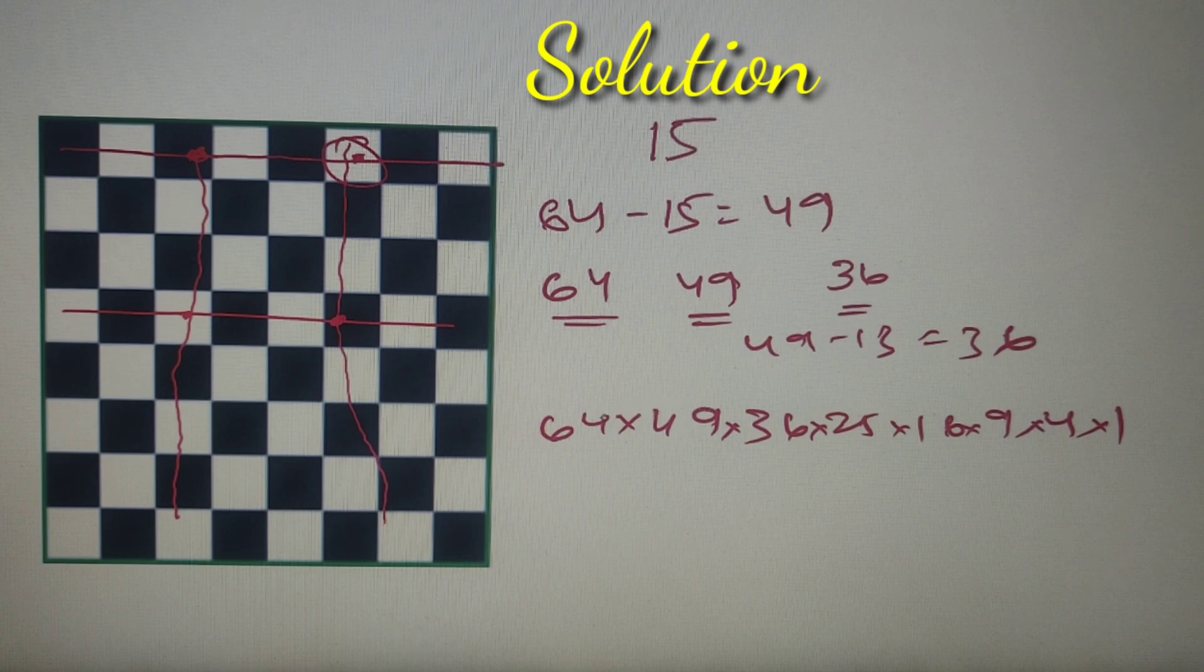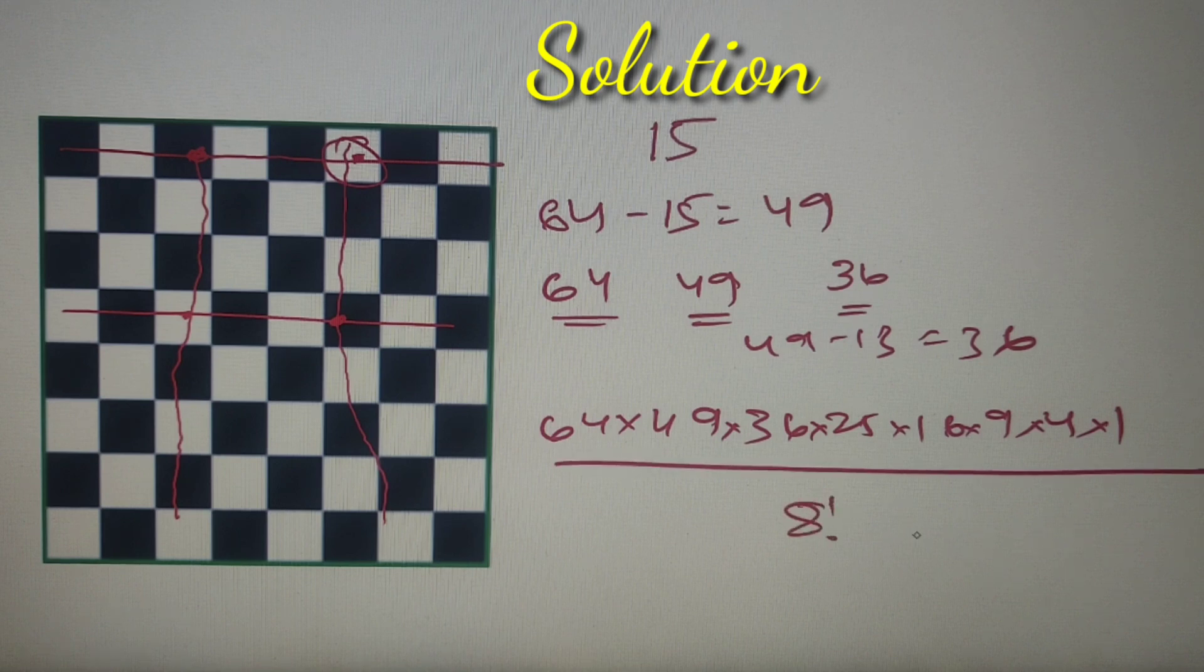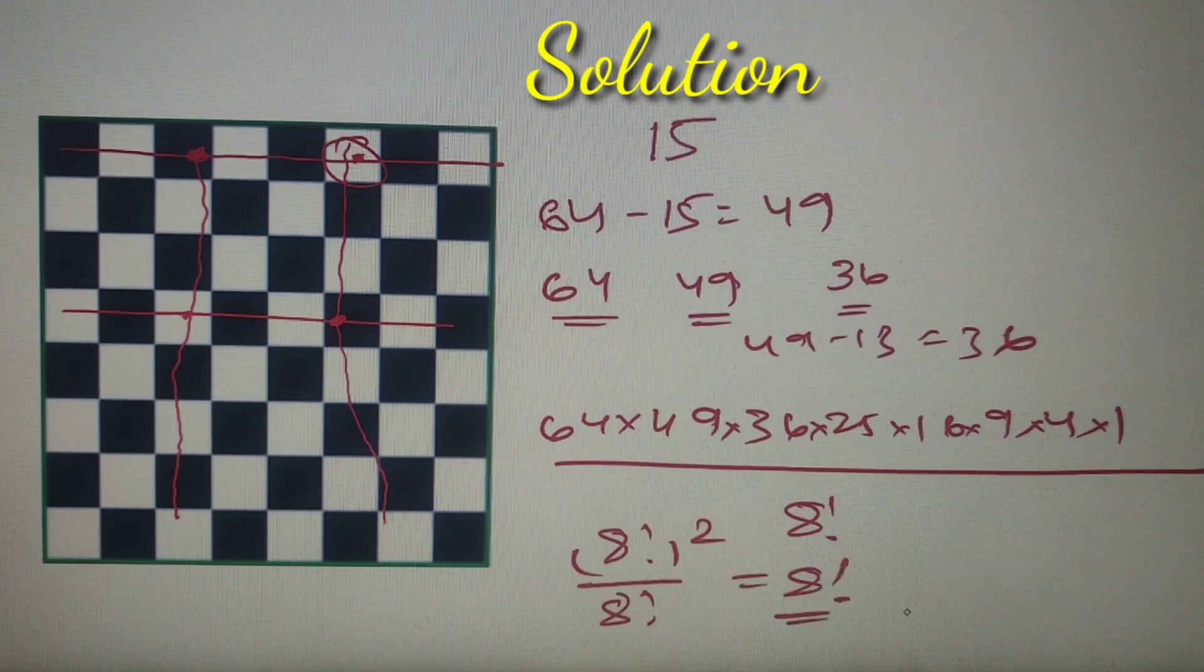Now you'll notice that we'll have a lot of duplicate items because all these 8 rooks are considered to be the same. So we can say that in order to delete all the duplicates, we have to divide them by 8 factorial. Now we know that 64 is 8 square, 49 is 7 square, so on, all these are squares. So we have basically 8 factorial square in the numerator and if we divide it by 8 factorial, our result is 8 factorial.